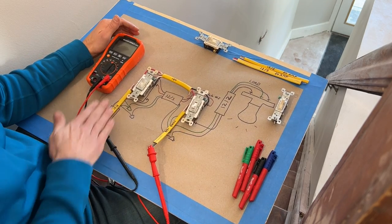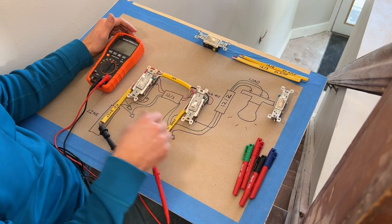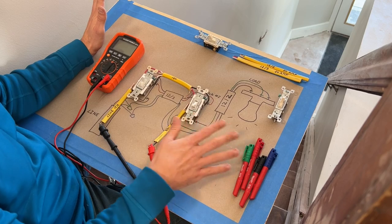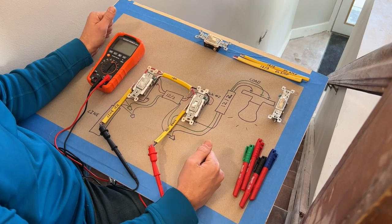We have a 12-3 piece of Romex traveling between the two switches. We have 12-2 going in and 12-2 going out. I have simplified this by taking the ground and neutral basically out of the circuit, and we're only looking at the hot side.